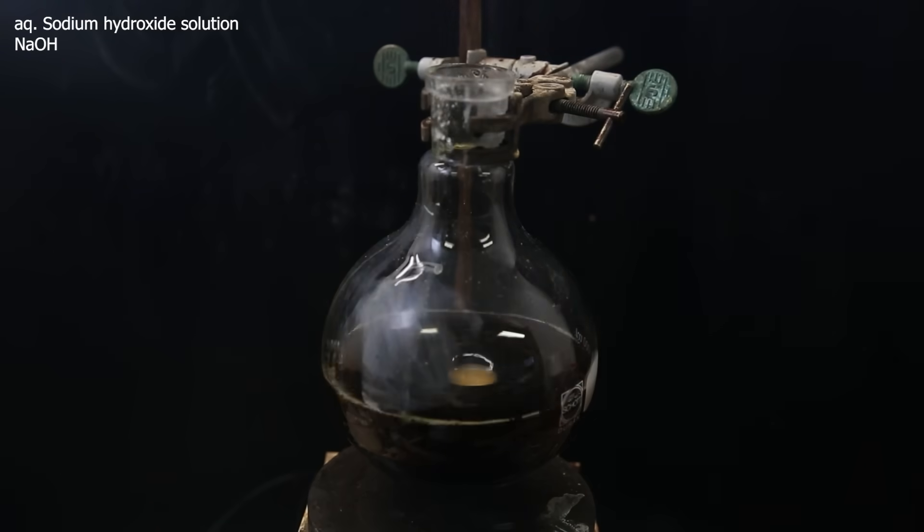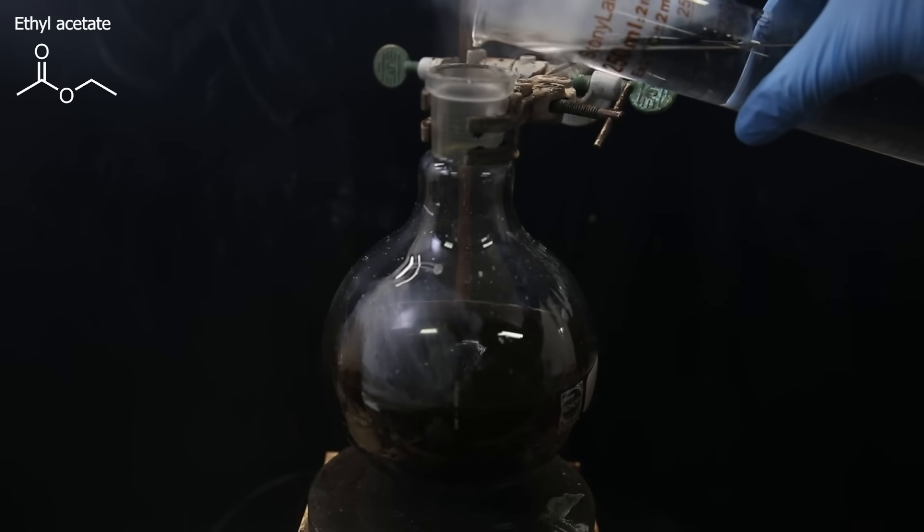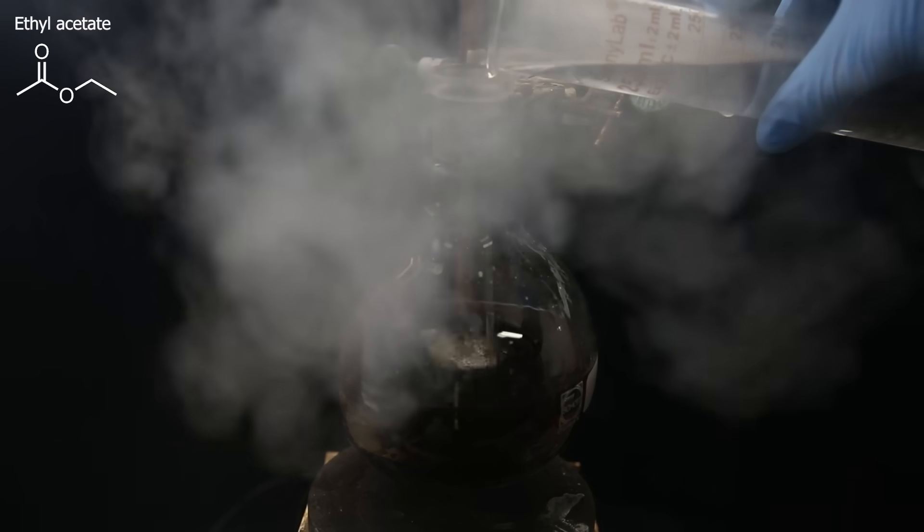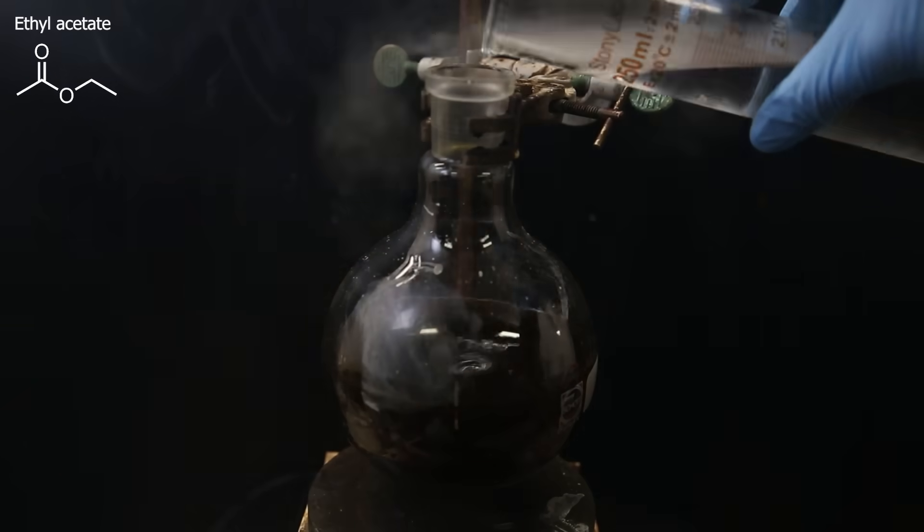And also some solid sodium hydroxide, otherwise the product might be protonated and stay in the water phase. When that's done I can add ethyl acetate as the extraction solvent to get out the product. Since the water is still hot it will also help to cool it down by boiling part of the solvent away.